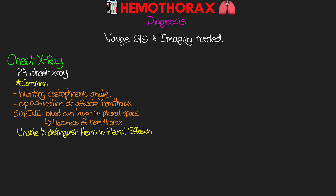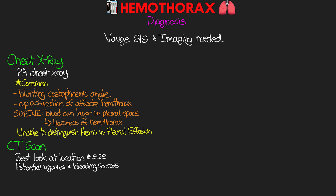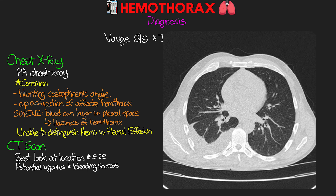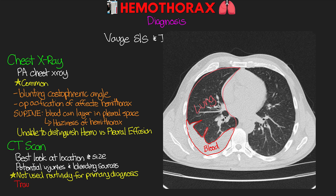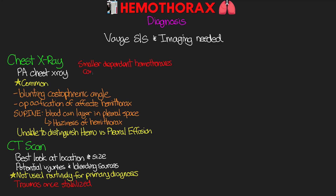The next bit of imaging is our computed tomography or CT scan. The CT gives us the best look at the location and size of the hemothorax, along with any other potential injury to other structures as well as potential sources of bleeding. Here's an example of a CT scan where it's pretty obvious where we have our collection of fluid or blood and the rest of the lung tissue around it. The CT is not used routinely as our primary diagnosis, but we will often use it — especially for trauma patients once the trauma is stabilized — because sometimes smaller dependent hemothoraces can be hidden on x-ray behind the diaphragm and some abdominal structures.